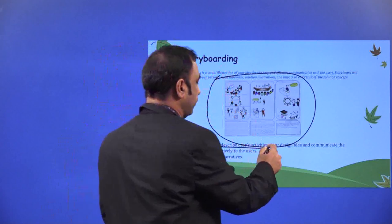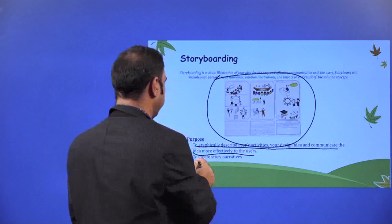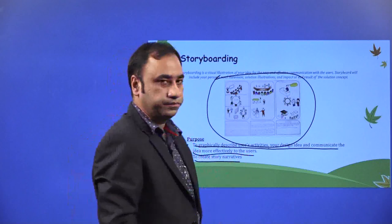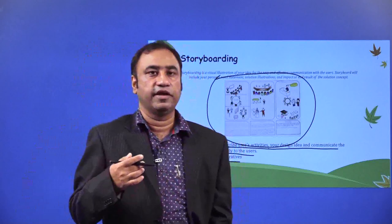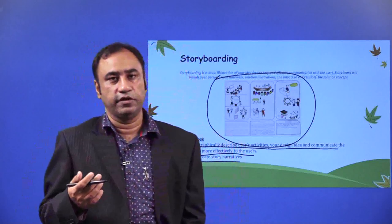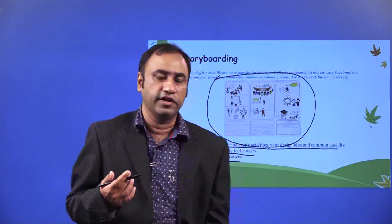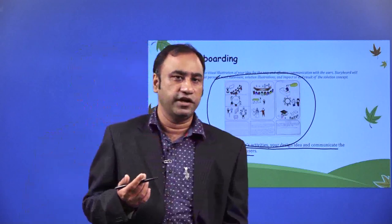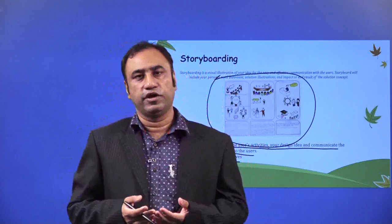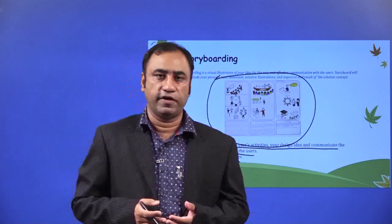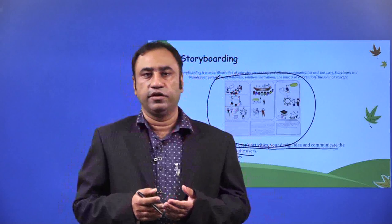To graphically describe users' activities, your design idea, and communicate the idea more effectively to the user — to create story narratives. This is where ads about a particular brand or business come out with different types of ads, where they actually explain the product through the storyboarding format. This is how you also need to explain your idea — it is not necessarily a business idea; it can be any idea where you want to express to the world. If you have written a book, you have to tell the world why you wrote this book and what it is all about. So the design thinking processes we have learned — empathize, define, ideate, prototype, testing, iteration — and finally launching the product or idea for the users. Thank you, kids.